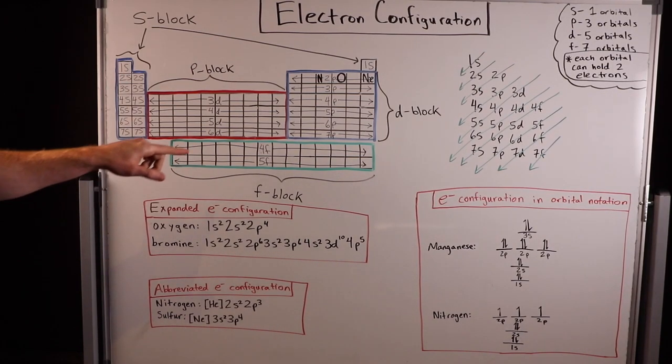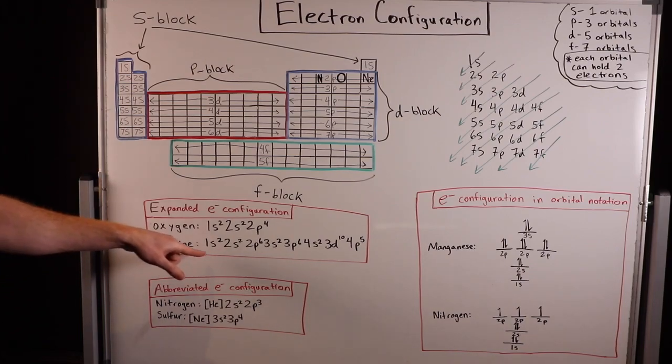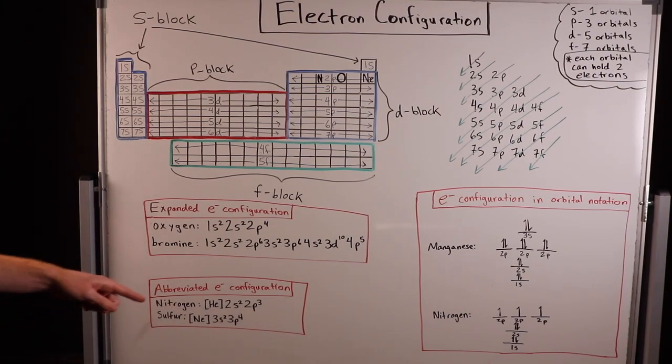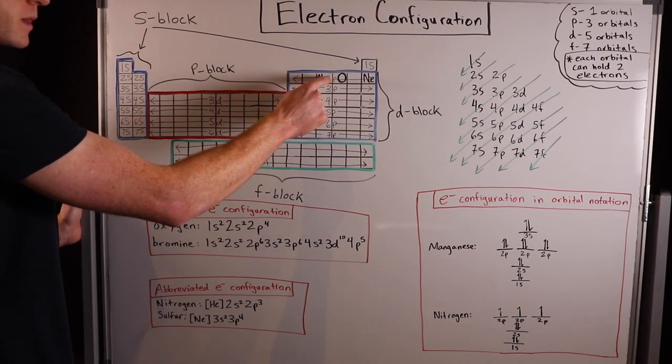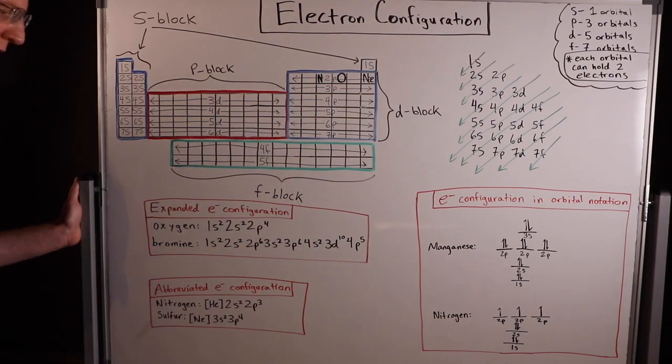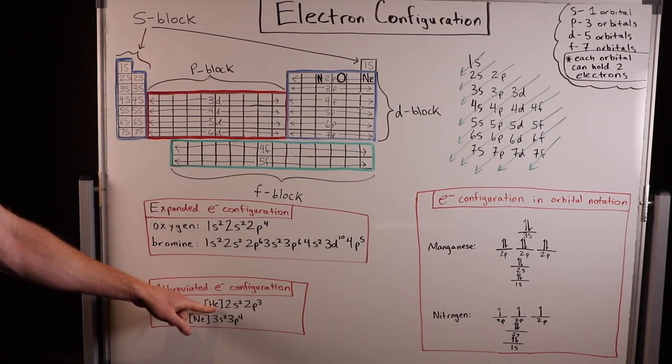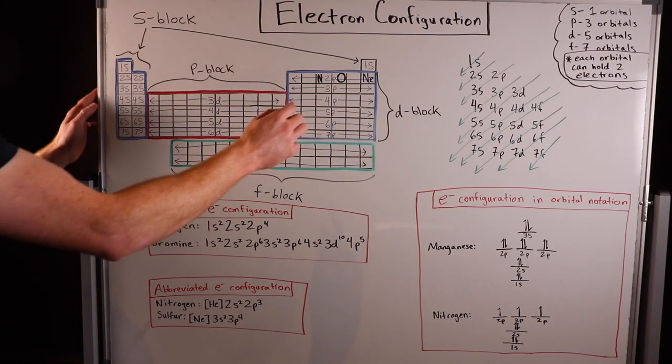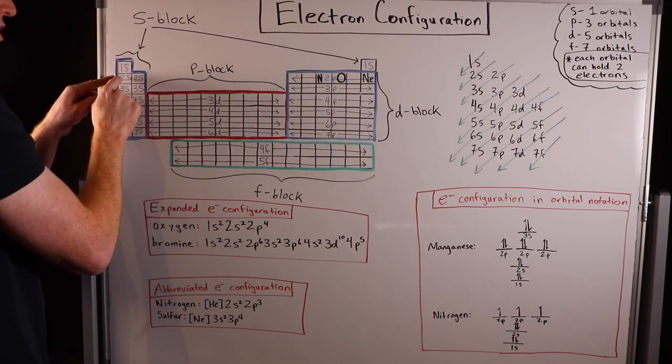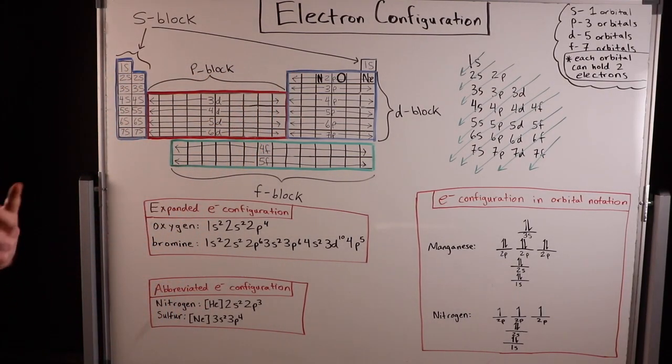You can imagine once you get to some of the later elements on the periodic table, these expanded electron configurations are going to become extremely long. So chemists have come up with a method to abbreviate the electron configurations by using noble gases in the notation. For nitrogen, we could write nitrogen's expanded electron configuration 1s2, 2s2, 2p3. But instead of writing that 1s2, we can save some space by just saying helium. We know helium is right here. So instead of saying 1s2, we'll just put helium and then continue on.